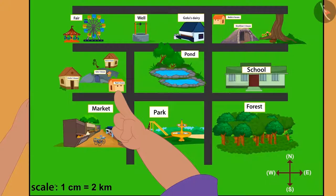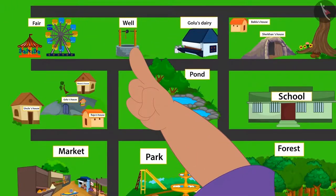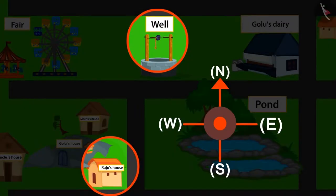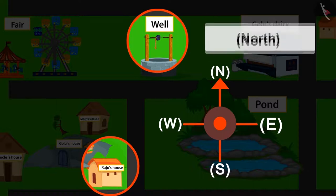This is your home and this is the well. The well is above your home on the map. Which means, according to the compass, the well is towards North from your house.